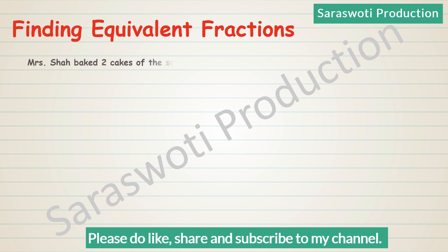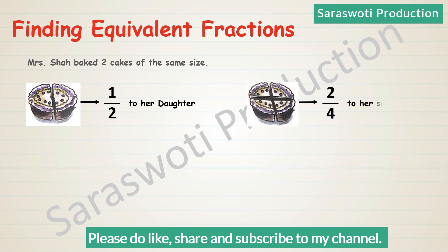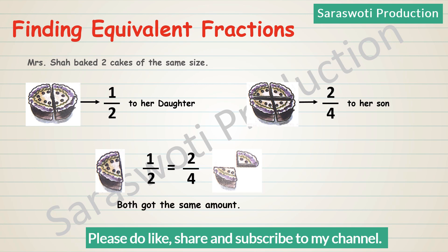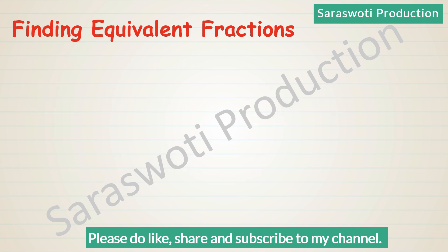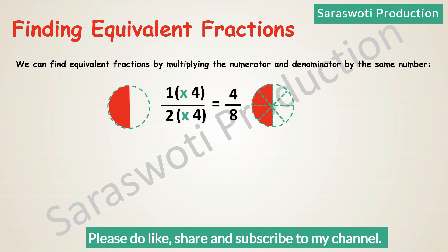Finding equivalent fractions. Mrs. Sam baked two cakes of the same size. She divided one cake into two equal parts and gave 1/2 to her daughter. She divided the other cake into four equal parts and gave 2/4 to her son. Here, 1/2 is equal to 2/4 — both got the same amount. We can find equivalent fractions by multiplying the numerator and denominator by the same number. For example, 1/2: 1×4 over 2×4 equals 4/8. And 2/3: 2×2 over 3×2 equals 4/6.